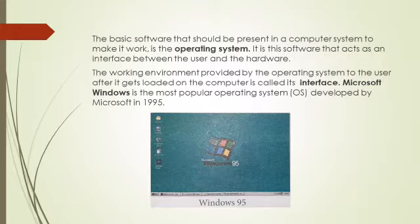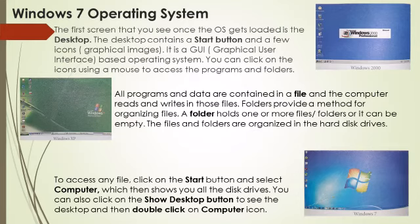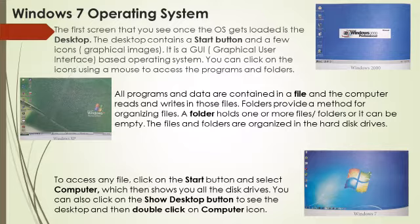Microsoft Windows is the most popular operating system developed by Microsoft in 1995. Now let us start with Windows 7 Operating System. The first screen that you see once the operating system gets loaded is the desktop. The desktop contains a start button and a few icons or graphical images. The desktop is the main screen from which you can start working on a computer.